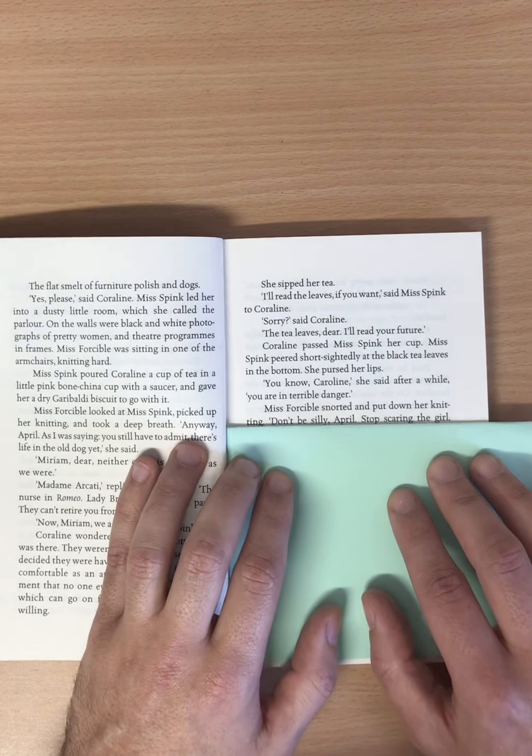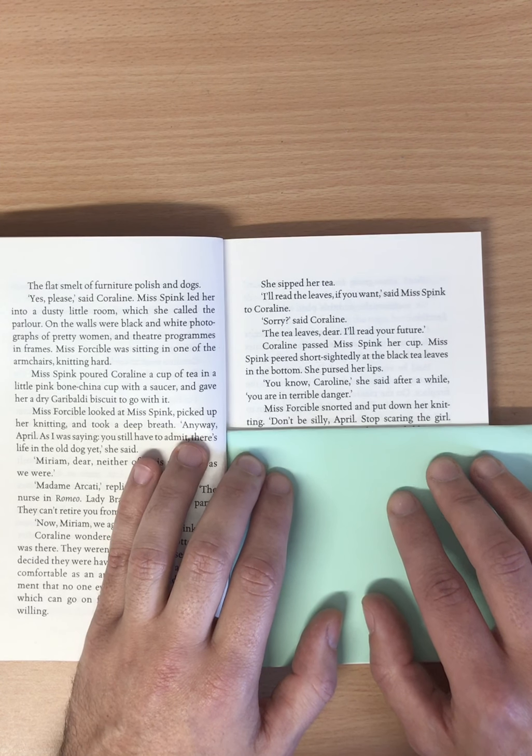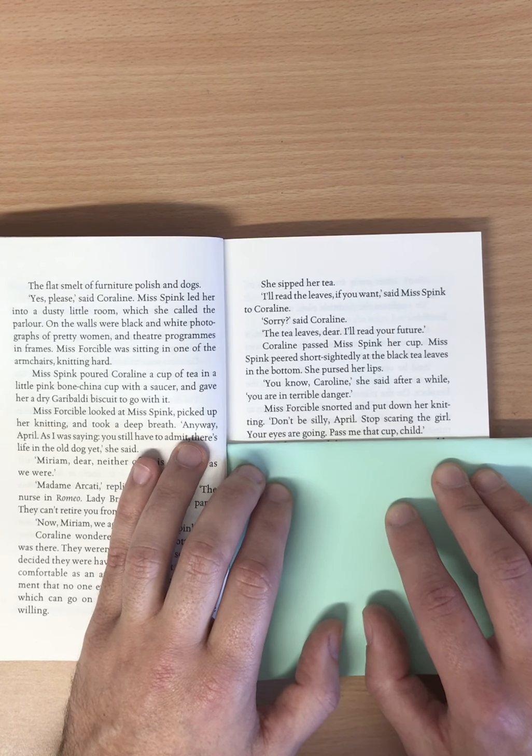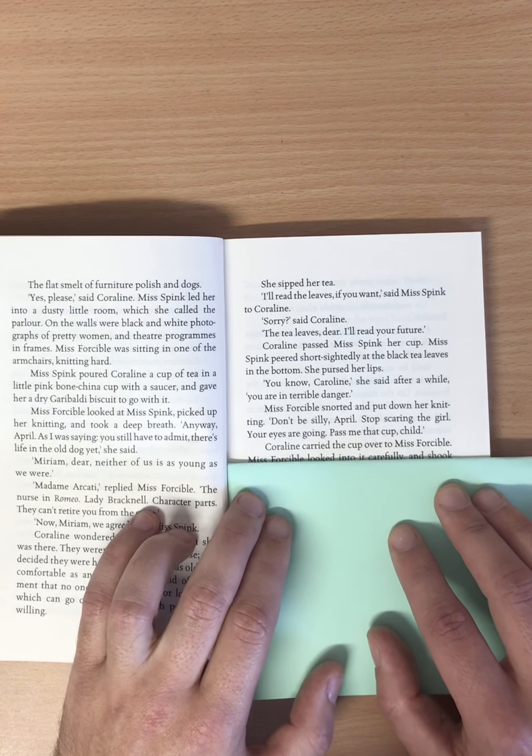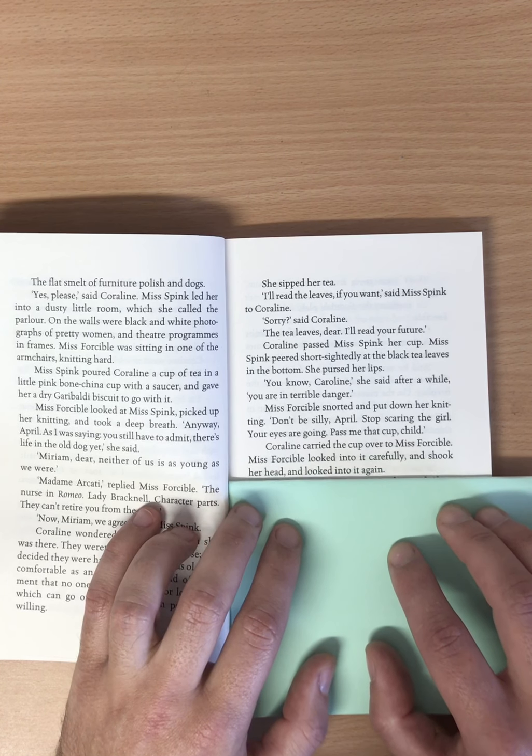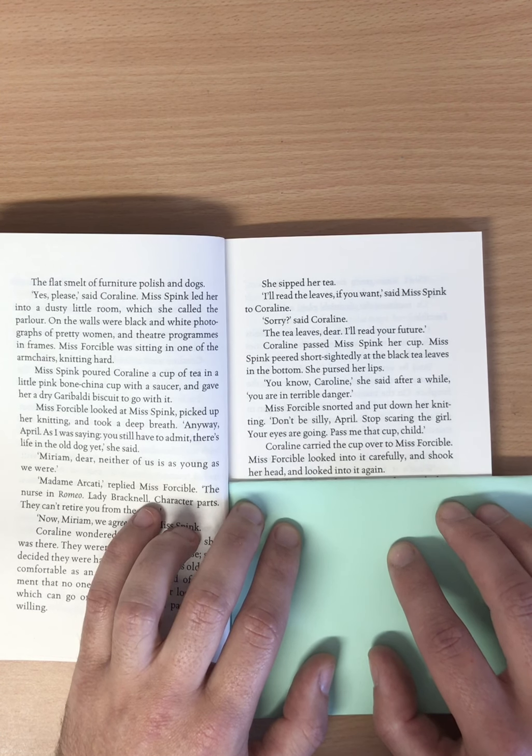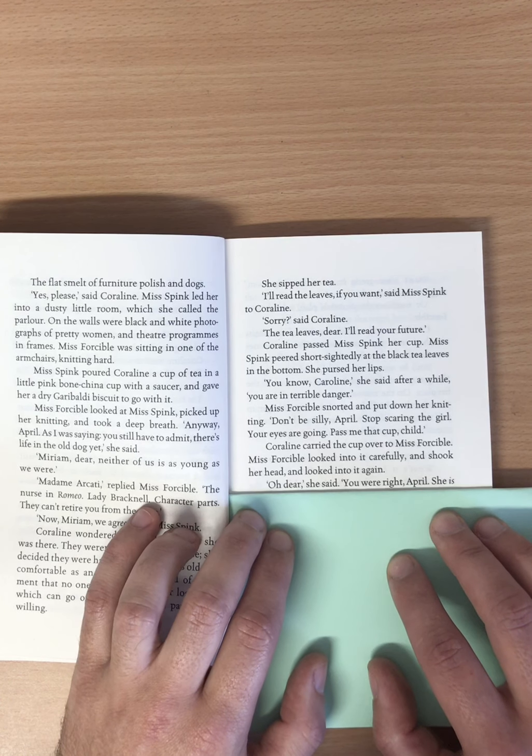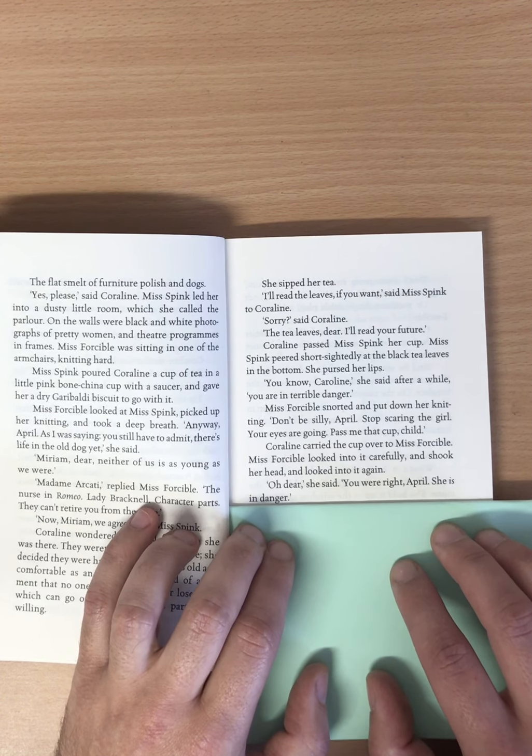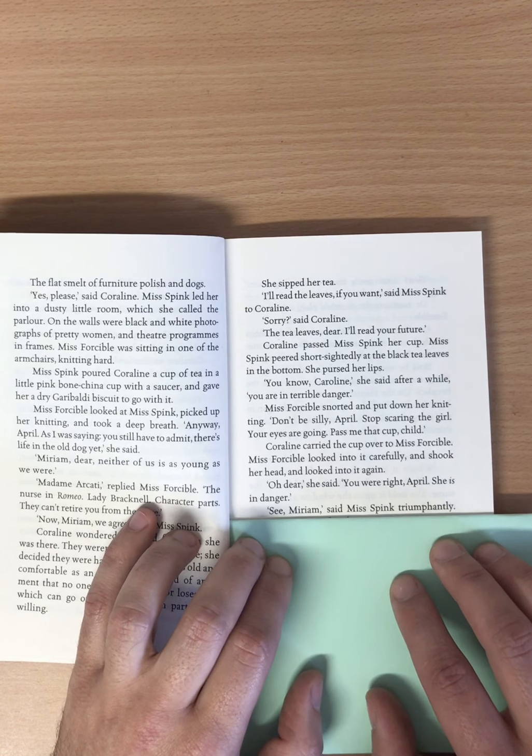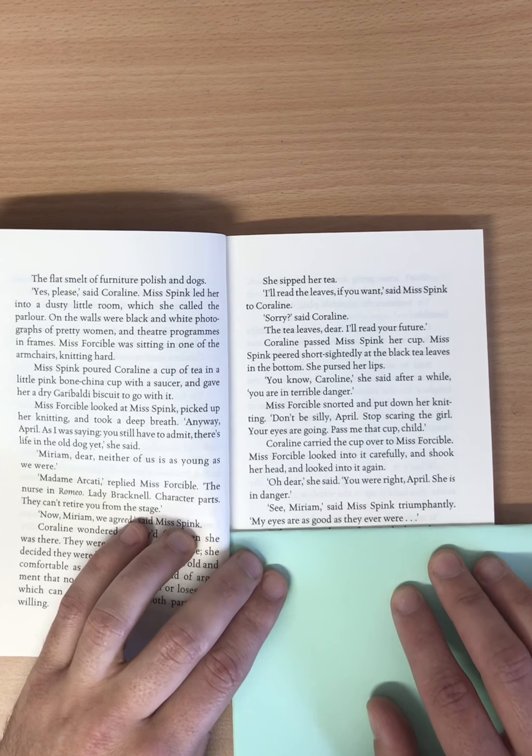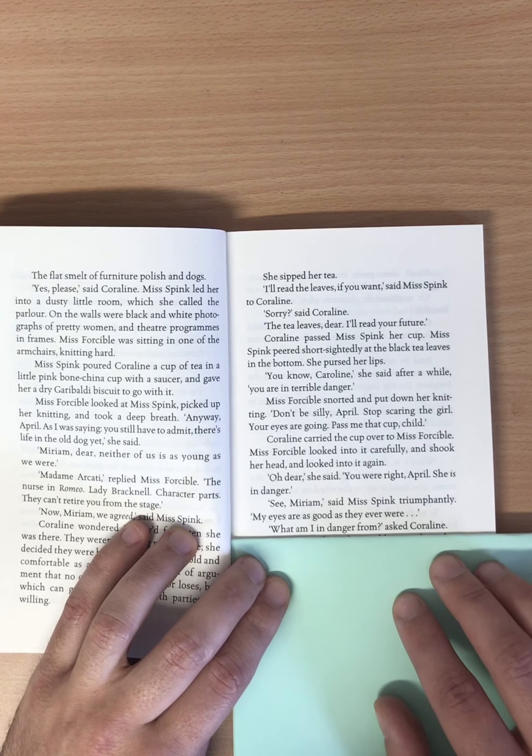Coraline passed Miss Spink her cup. Miss Spink peered short-sightedly at the black tea leaves in the bottom. She pursed her lips. You know, Caroline, she said after a while, you're in terrible danger. Miss Forcible snorted and put down her knitting. Don't be silly, April. Stop scaring the girl. Your eyes are going. Pass me that cup, child. Coraline carried the cup over to Miss Forcible. Miss Forcible looked into it carefully and shook her head and looked into it again. Oh dear, she said. You were right, April. She is in danger. See, Miriam, said Miss Spink triumphantly. My eyes are as good as they ever were.